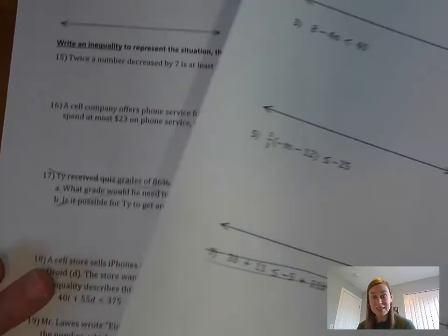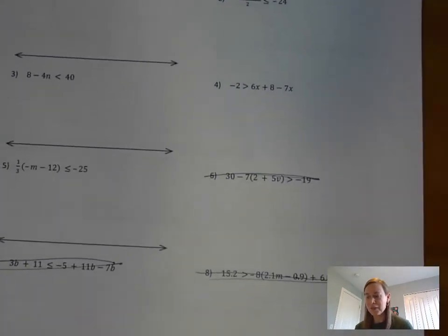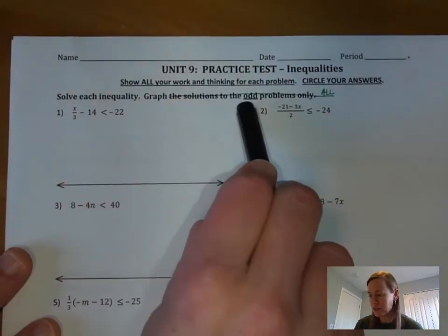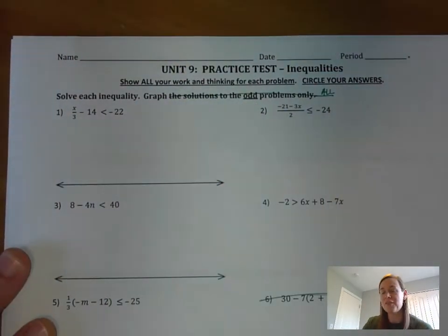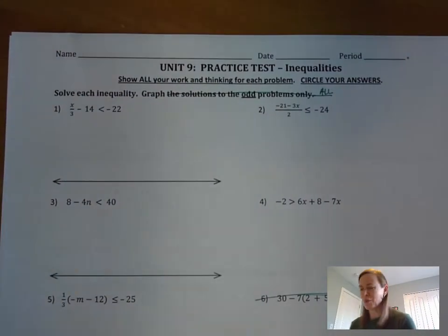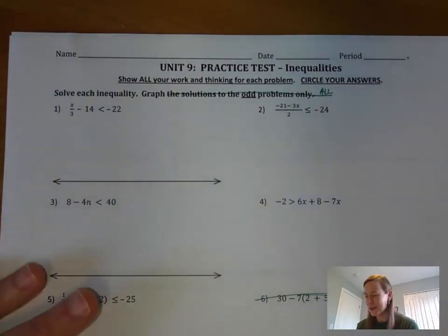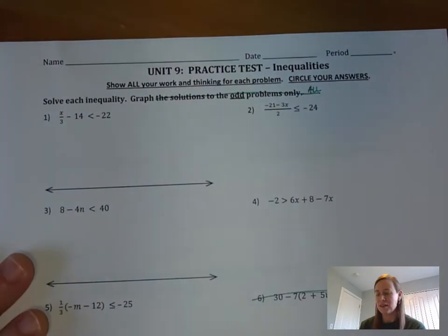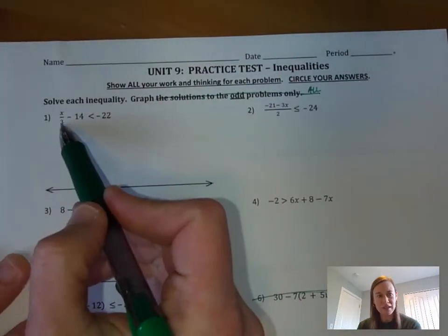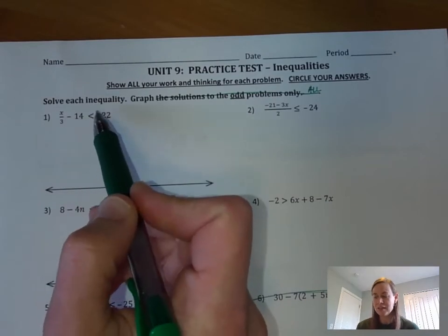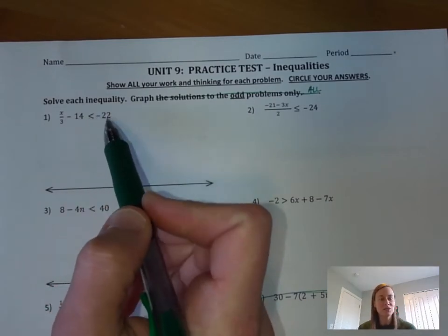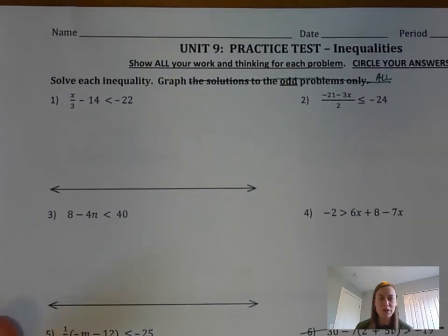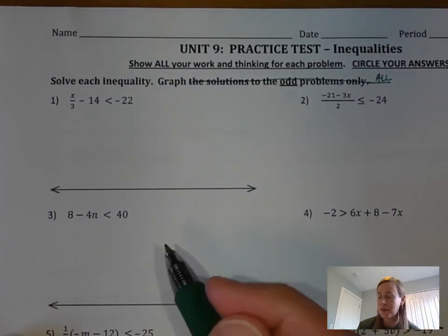Let's get started with number 1. We're going to graph all of these problems even though we're only doing half of them, so it works out. We have x over 3 — in other words, x divided by 3 — minus 14 is less than negative 22. We're going to solve this exactly the same way we would solve a two-step equation.